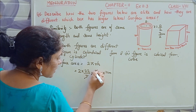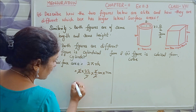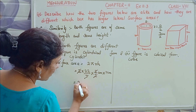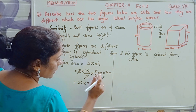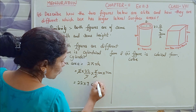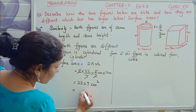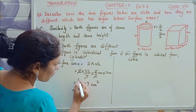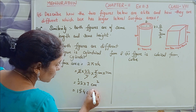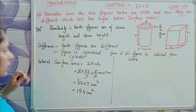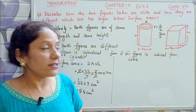So 7 ones cancel and 2 ones cancel, giving us 22 into 7 divided by 2. That is 154 centimeters square. This is the lateral surface area of the cylinder, the first figure.